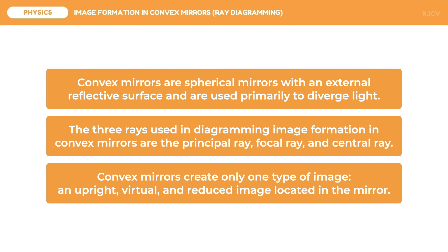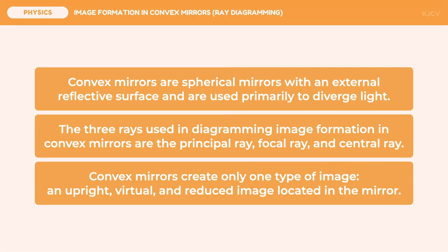It is upright, virtual, and reduced image located in the mirror. And that ends our discussion on image formation in convex mirrors through ray diagramming.